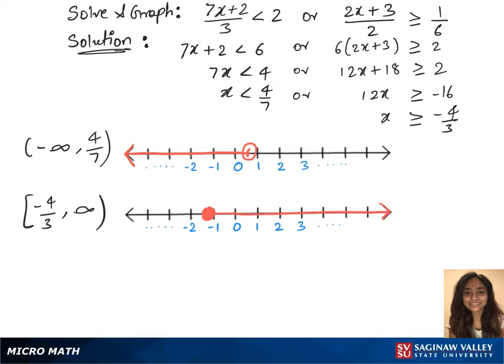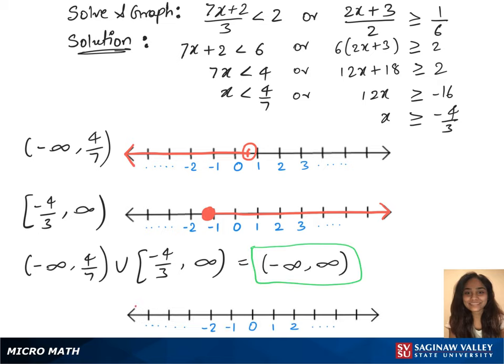Now we'll see the union between those two graphs, which is minus infinity to 4 over 7 union minus 4 over 3 to infinity. For this, the solution set is minus infinity to infinity. We'll plot this on the graph. Mark minus infinity and positive infinity and shade the region in between those two points.